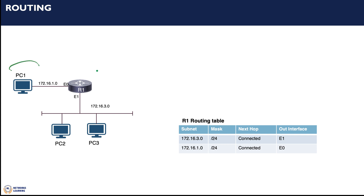We've added PC1, and the subnet between R1 and PC1 is 172.16.1.0. Router R1 has one interface E0 on one subnet and E1 on the different subnet where PC2 and PC3 are connected. When PC1 wants to send an IP packet to either PC2 or PC3, it knows its own IP address and it knows the destination address — for example, PC2's address would be 172.16.3.2. PC1 knows that PC2 is not on the same subnet, so it sends its packets to its default gateway, which is R1's E0 interface.